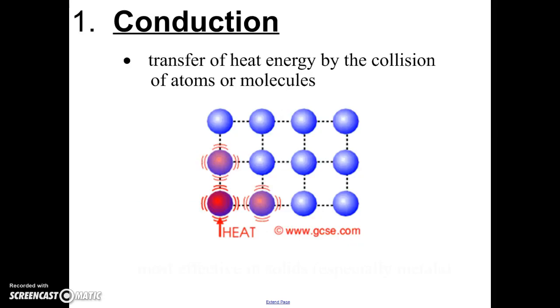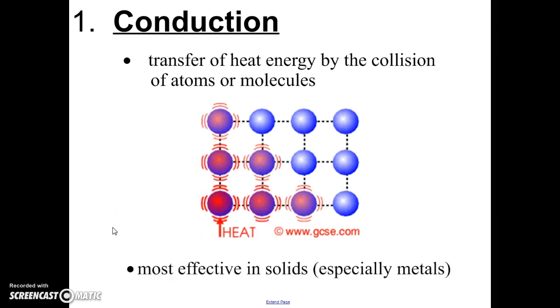There's three methods by which energy is transferred. The first one is called conduction. Conduction occurs when heat makes the atoms in a molecule start to vibrate, and those vibrations cause the atoms to bump into the ones next to them, and they start to vibrate, and the energy transfers to the next one, and so on and so forth. Conduction is most effective in solids, especially in metals.